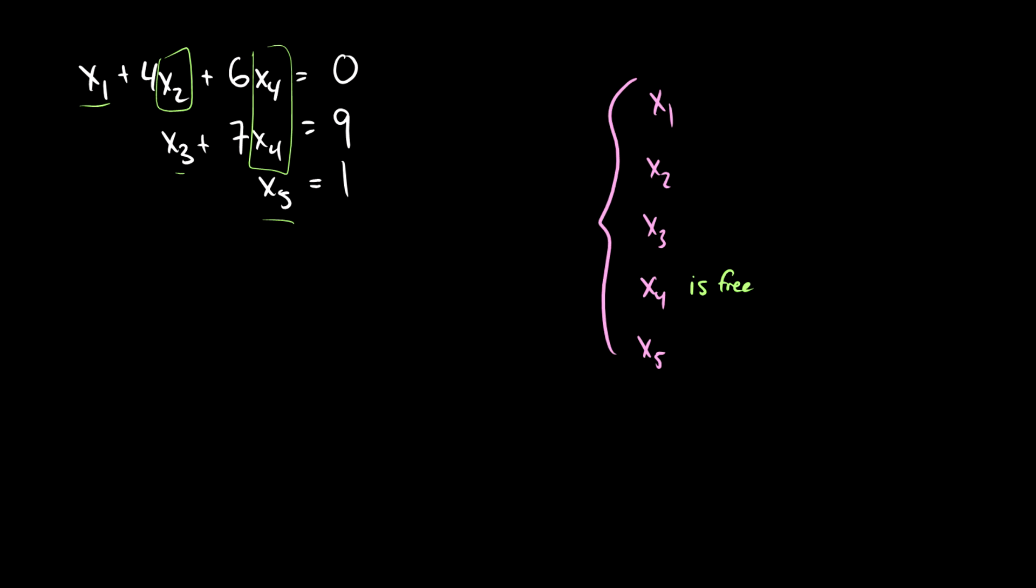So what we can do is we can actually pick a variable to solve. So let's rewrite the first one in terms of x1. So x1 is going to be negative 4x2 minus 6x4, x3 is going to be 9 minus 7x4, and x5 is going to be 1. x1 is negative 4x2 minus 6x4, x3 is 9 minus 7x4, and x2 is free.